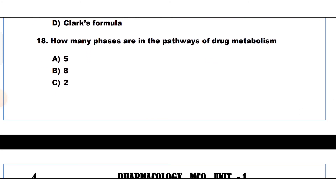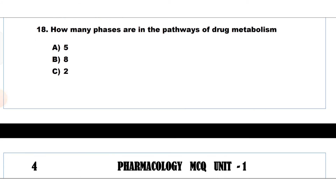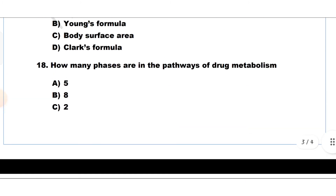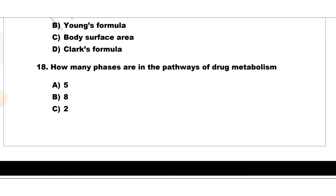Question number 18. How many phases are there in the pathways of drug metabolism? Option A: 5, Option B: 8, Option C: 2, Option D: 4. The answer is Option C, 2 — there are two pathways.